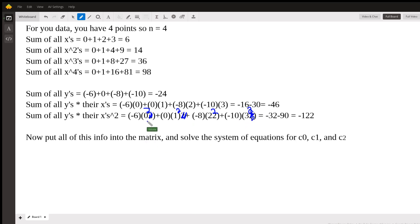And this is 3 squared. So that makes 0 plus 1. 2 squared is 4. So this makes a negative 32. And 3 squared is 9. So that makes this a minus 90. And that gives us negative 122.